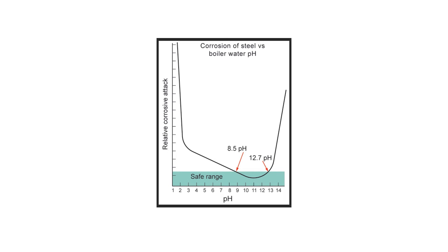Boiler water with a high pH can also be corrosive to metal exposed to the alkaline water. This corrosion results from the direct reaction of the hydroxide ion with the passivating magnetite layer, thus removing the protection of the magnetite layer. The unbalanced reaction is shown here: hydroxide ion plus Fe3O4 (magnetite) goes to FeO2 (ferric oxide ion) plus water. Continuous operation of a boiler with alkaline water will result in caustic corrosion, which causes generalized corrosion or severe localized gouging of the boiler metal, sometimes called caustic gouging.